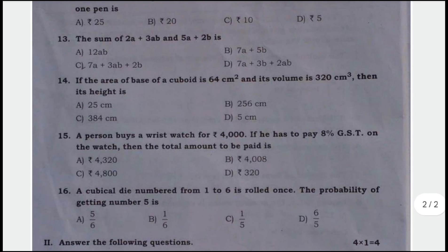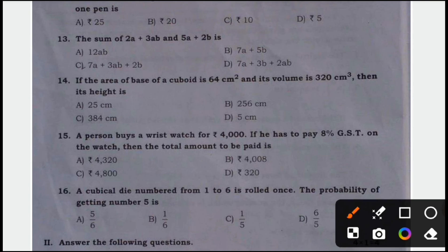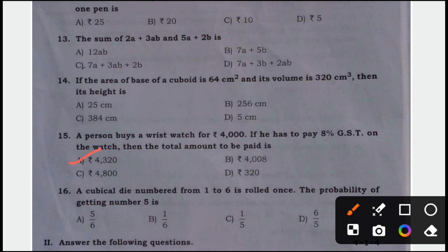15th question. If a person buys a wrist watch for Rs. 4000, if he has to pay 8 percentage GST on the watch, then the total amount to be paid, answer for this question is option A, Rs. 4320.